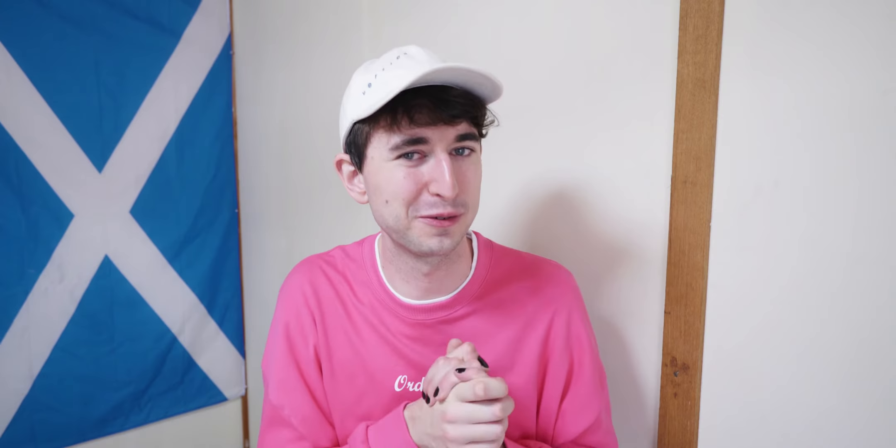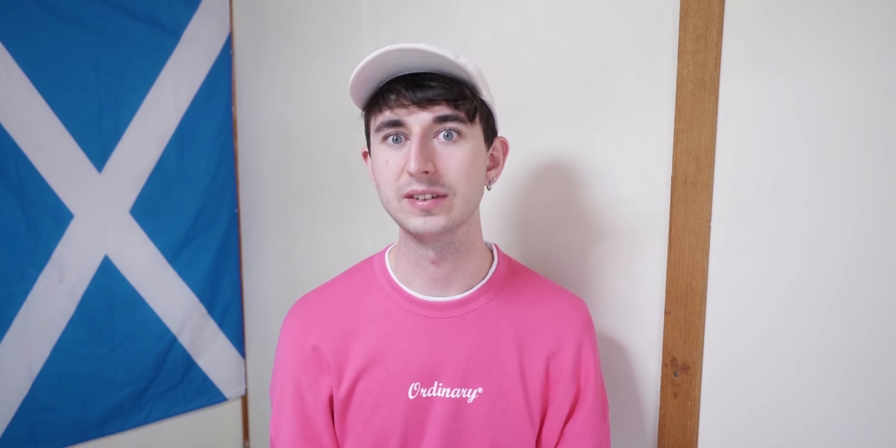The victim in my scenario was my co-ALT, who is an American JET that comes to my school once a week. So over the course of a few slides, I went through the details of the murder — like time of death, where it happened, cause of death, things like that. I made it clear that all of the kids in the class are suspects, and today we were going to find out who murdered David Sensei. Then I explained the first thing they had to do is come up with an alibi.